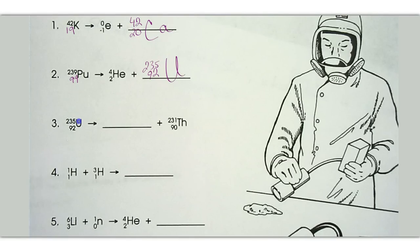Number 3, 235 over 92 uranium yields. What is this nucleus plus 231 over 90 thorium? So 231 plus this number have to equal 235. Or you could say 235 minus 231 equals 4. And then 92 minus 90 equals 2. And the atomic number 2 is helium. So this has emitted an alpha particle. This was an alpha decay. Similar to number 2, which is also an alpha decay. And number 1 was a beta decay.